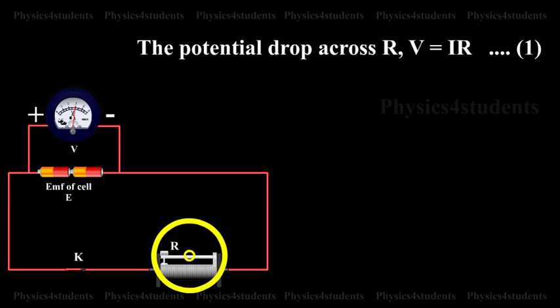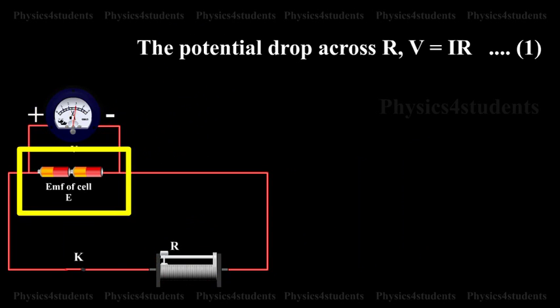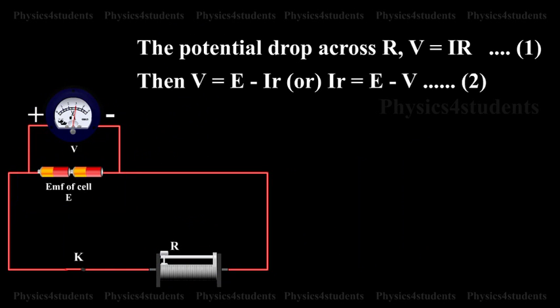The voltmeter reads a value V less than the EMF of the cell. Then, V = E - Ir, or Ir = E - V.